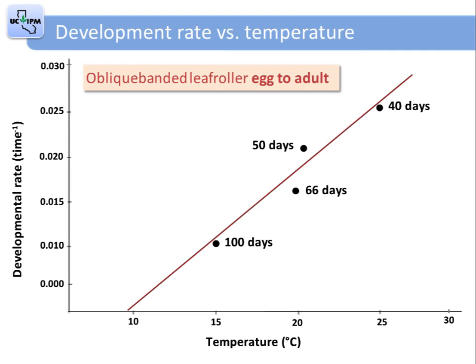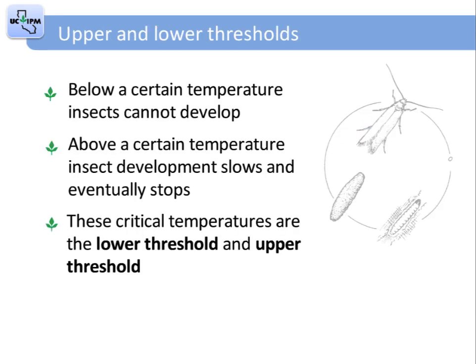This graph shows the average development time from egg to adult for different batches of oblique-banded leaf roller, also called OBLR, raised at different temperatures. As the temperature increases, the development time decreases. At 15 degrees Celsius it takes approximately 100 days for an egg to develop to an adult, but at 25 degrees Celsius it takes only about 40 days. Below a certain temperature insects cannot develop, and above a certain temperature the development slows and will eventually stop. These critical temperatures are referred to as the lower threshold and upper threshold and represent temperature limits on insect development.